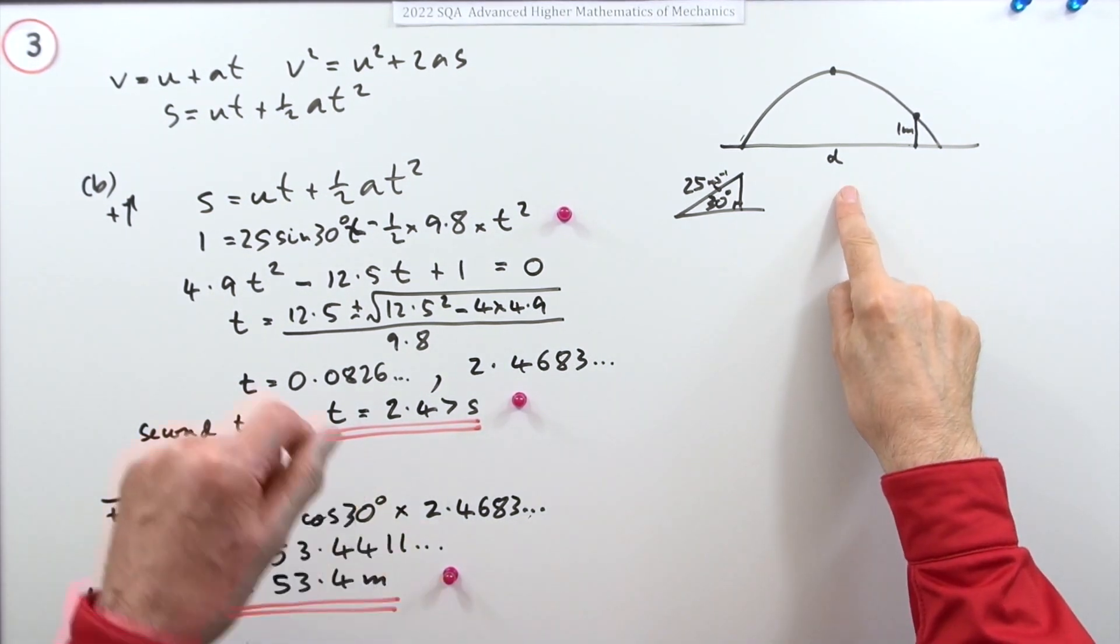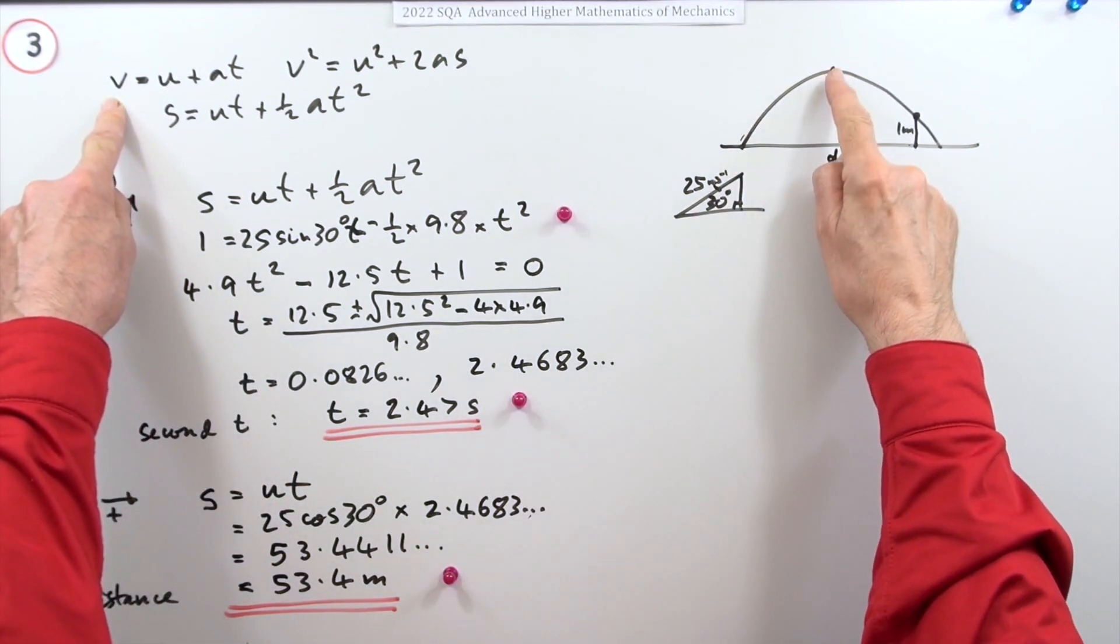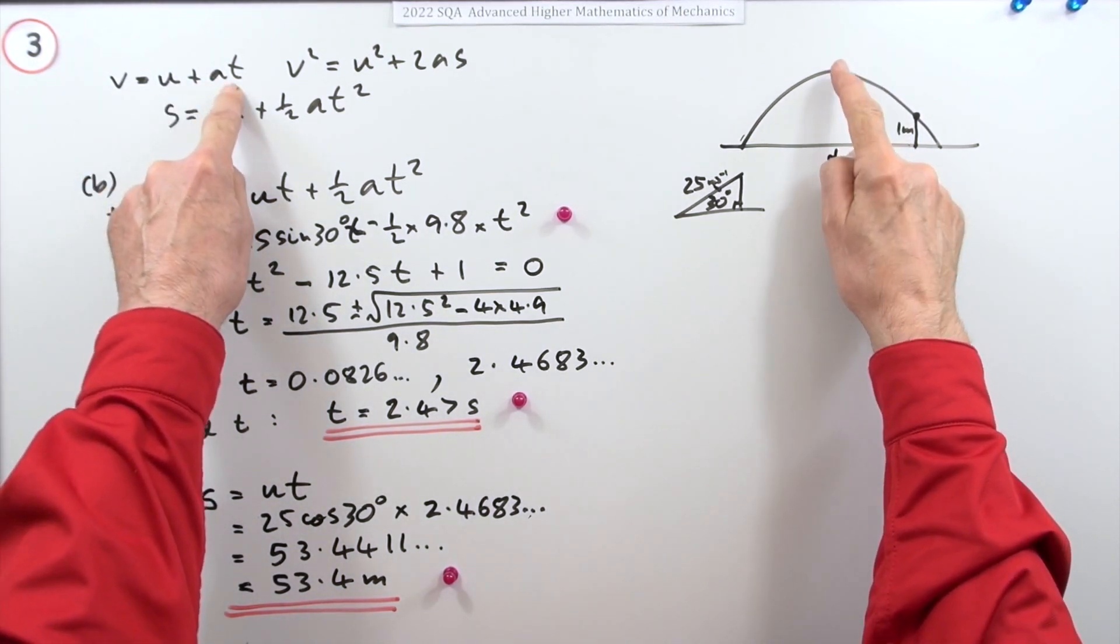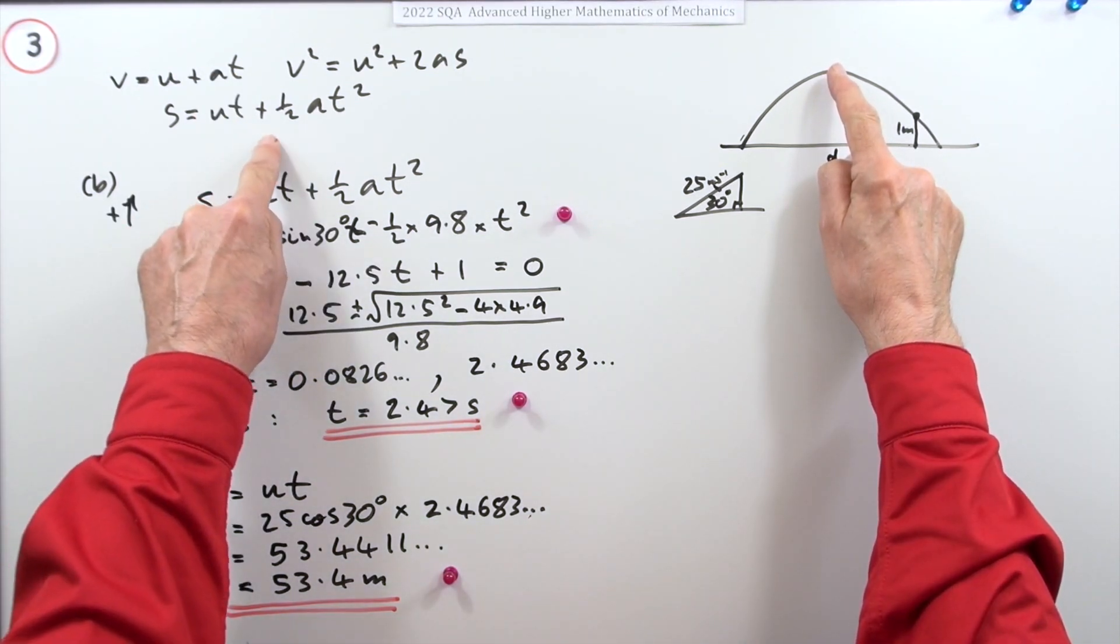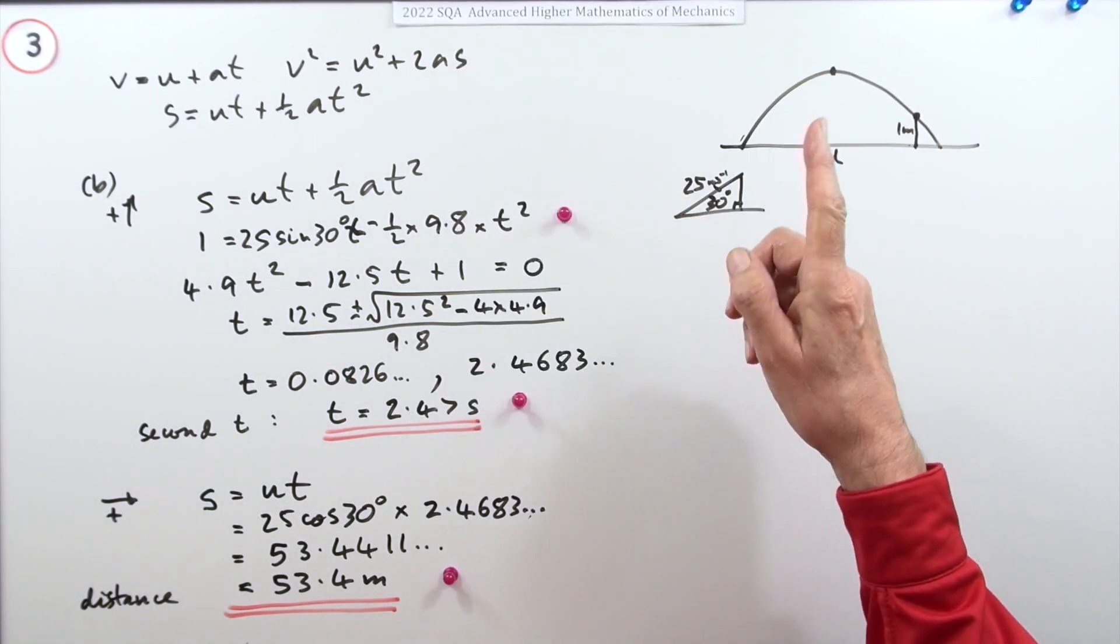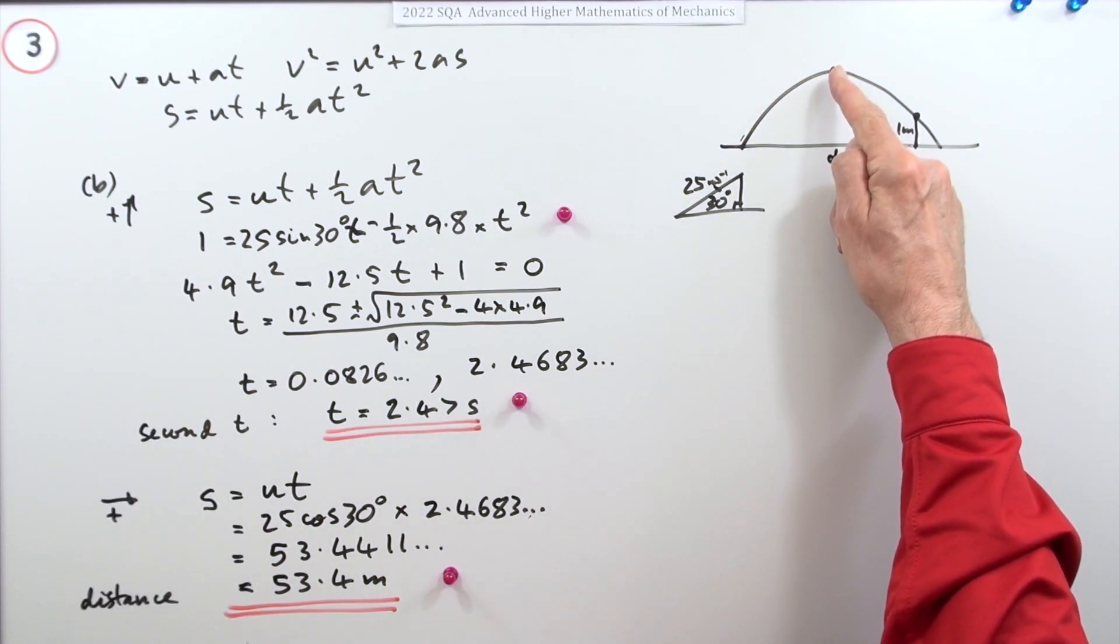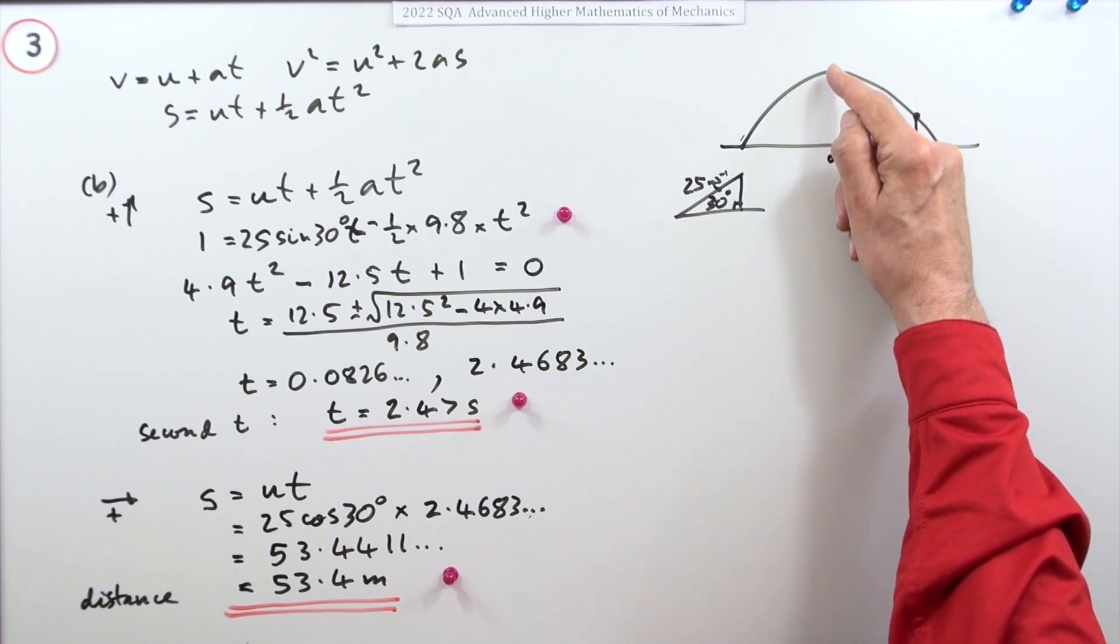You could have done that a longer way. For part a, you could have used this to find the time it took to get to the top and then put it into this to get the distance to the top, which would be a lot longer than just using that single formula. But in part b, having found the time it got to the top, to find the total time to get to one meter you've only got to find the time it takes to drop down to one meter from the ground.